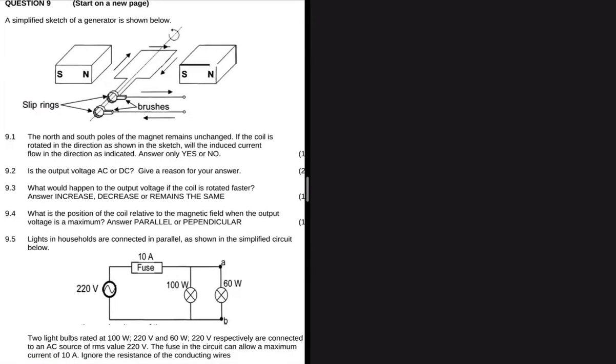A simple sketch of a generator is shown below. Question 9.1 says the north and south poles of the magnet remain unchanged if the coil is rotated in the direction as shown in the sketch. Will the induced current flow in the direction as indicated? Answer yes or no. So basically what they're asking us is to determine the direction of the induced current.